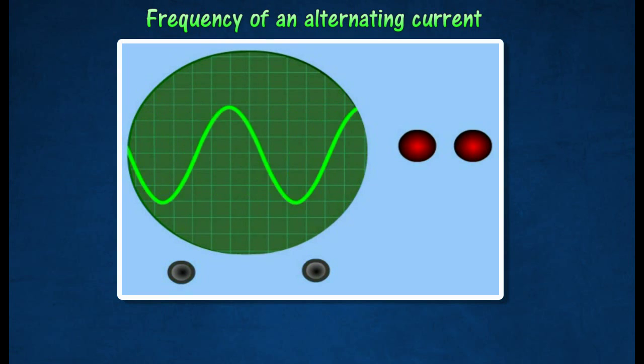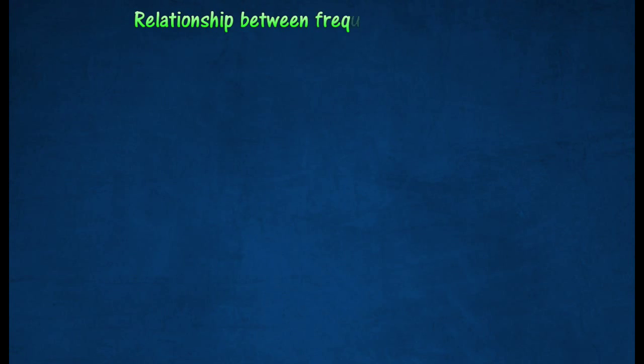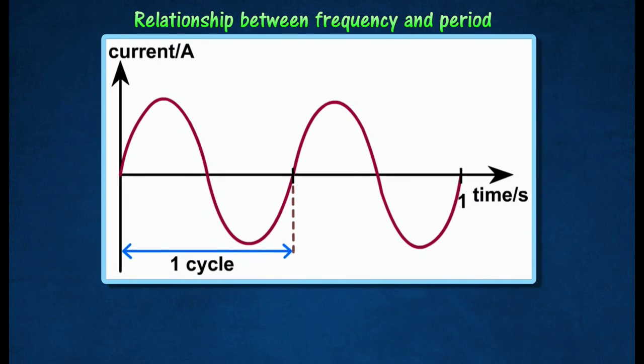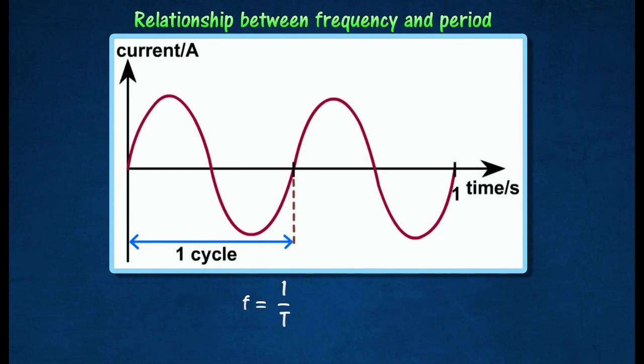The time for the alternating current to make one complete cycle is known as its period T. Thus, the relationship between F and T is given by the following equation.